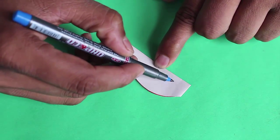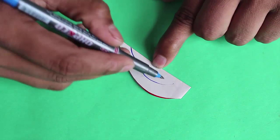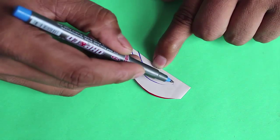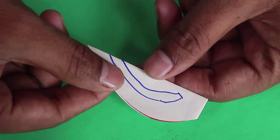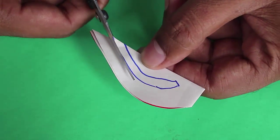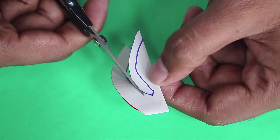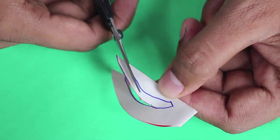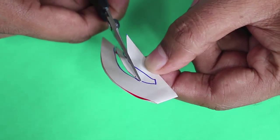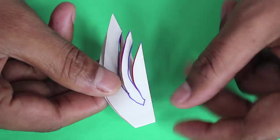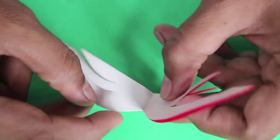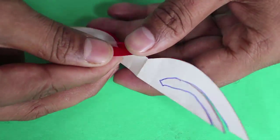Once again fold it into a quarter and make two more curved lines and then just cut on the curved lines. Once again open the paper.